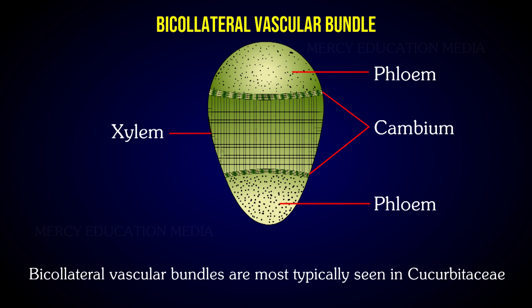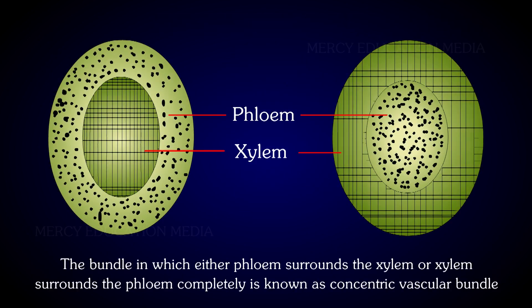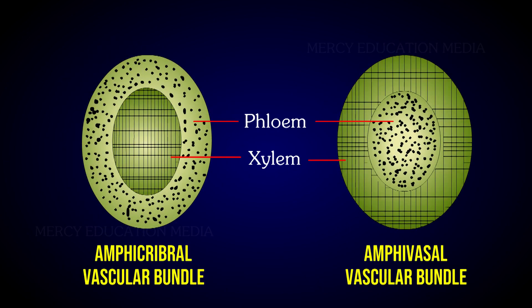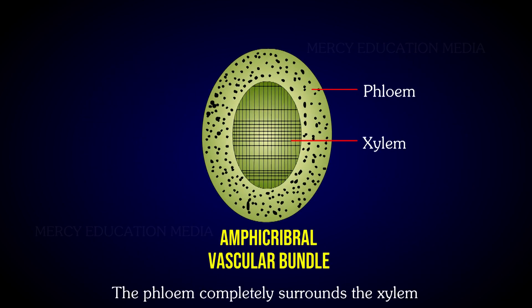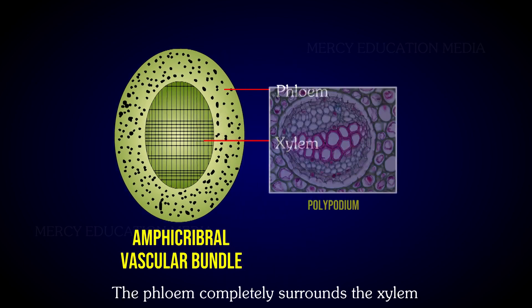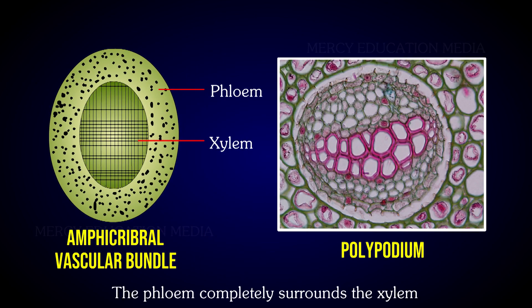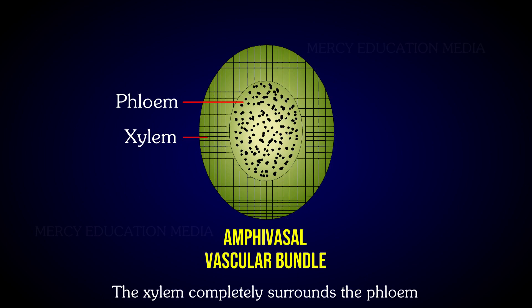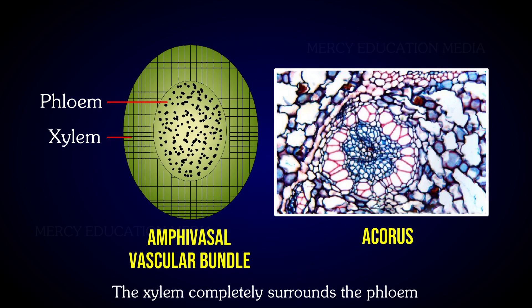Bicollateral vascular bundles are most typically seen in Cucurbitaceae. The concentric bundle is one in which either phloem surrounds the xylem or xylem surrounds the phloem completely; this is of two types: amphicribal and amphivasal. In amphicribal concentric vascular bundles, the phloem completely surrounds the xylem — e.g., Polypodium. In amphivasal concentric vascular bundles, the xylem completely surrounds the phloem — e.g., Acorus.